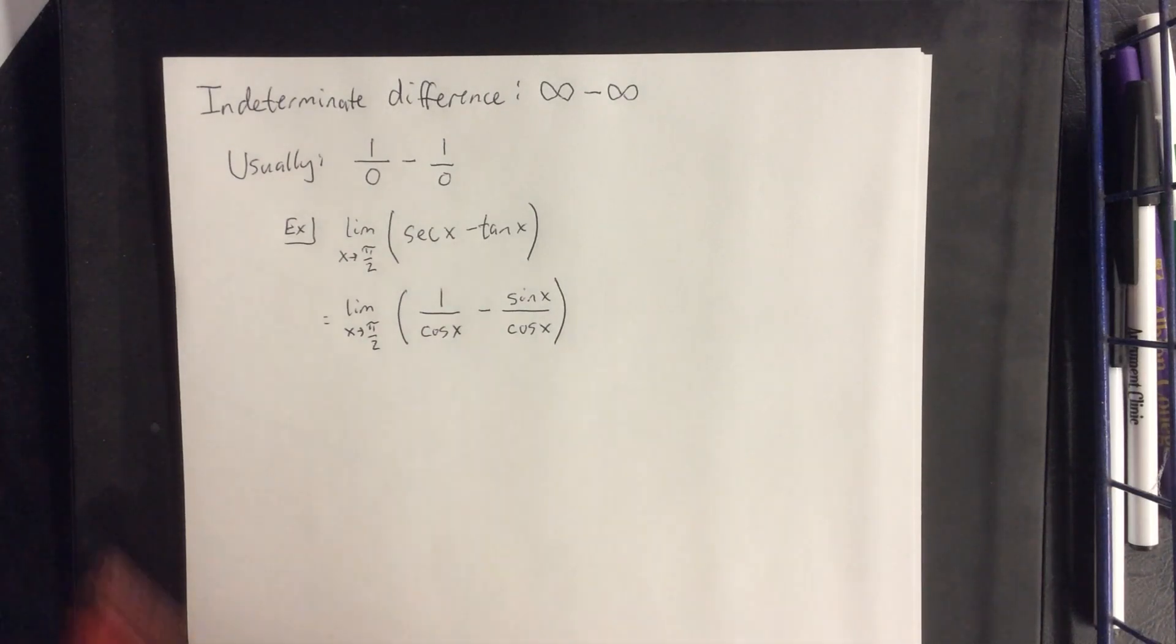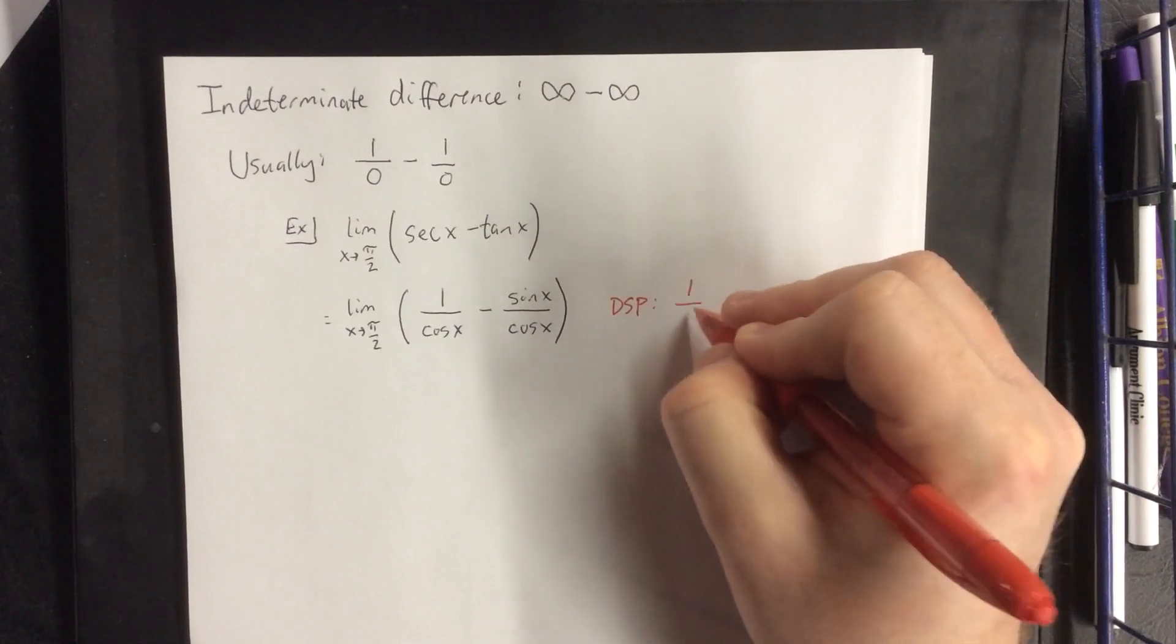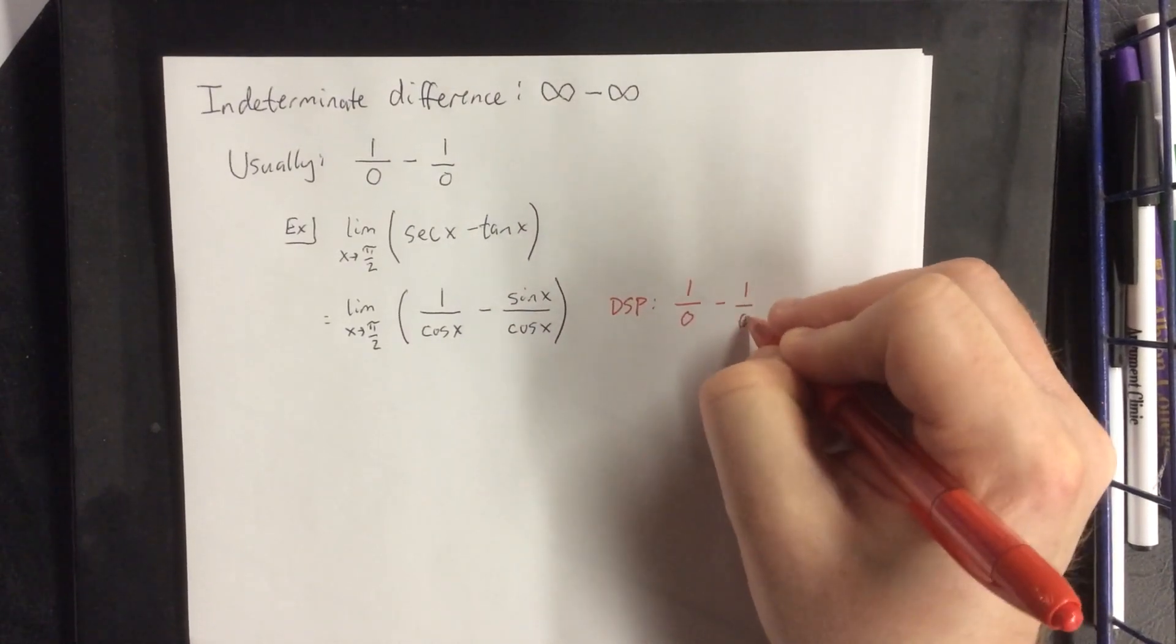If we attempted to use the direct substitution property by plugging in pi over 2, you would wind up with 1 divided by 0 minus 1 divided by 0.